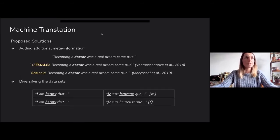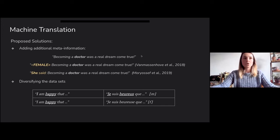What are the proposed solutions? My work from 2018 was actually the first that addressed this issue. We tried to append tags during training that indicated the gender of the speaker, and this way we could control the output of the sentences we were generating — though this is limited to the gender of the speaker.